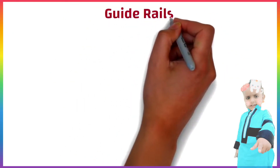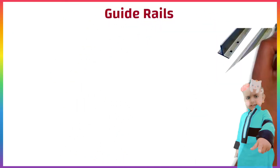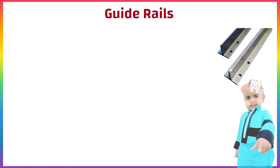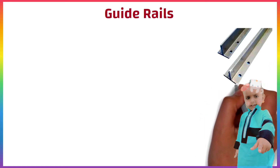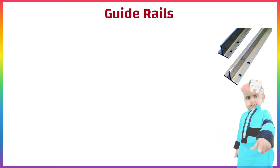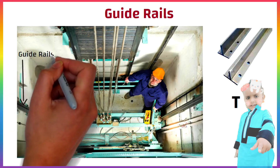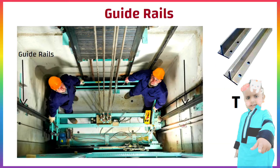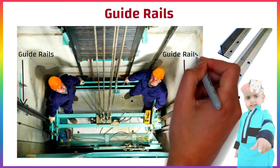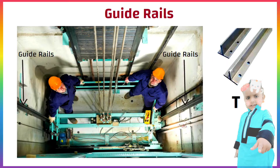Guide rails are generally made of steel and their shape is like the English letter T. They are installed vertically in a shaft to guide and direct the course of travel of an elevator car and elevator counterweights.